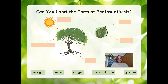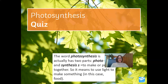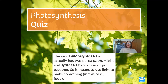Let's revise again — can you label the following parts? We know we need sunlight energy. Looking at the options — sunlight, water, oxygen, carbon dioxide, and glucose — we need sunlight, carbon dioxide, and water. Photosynthesis takes place in the green leaves, and we then have glucose and oxygen as outputs. Also, the word photosynthesis is made up of two parts: 'photo,' meaning light, and 'synthesis,' meaning to make or put together. So it means to use light to make something — in this case, making food.